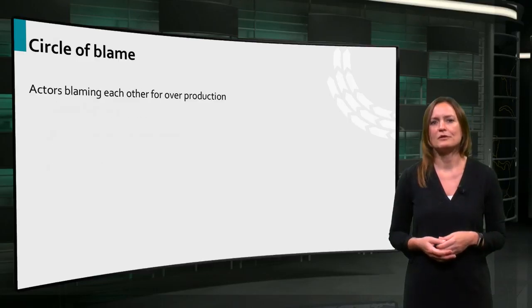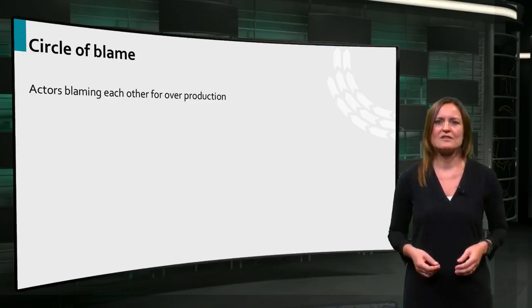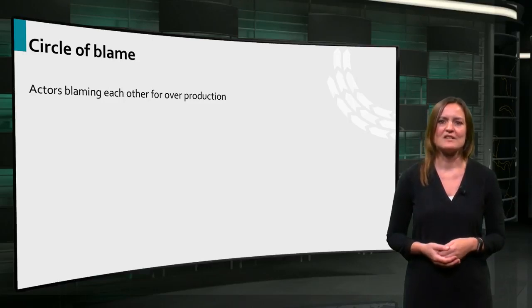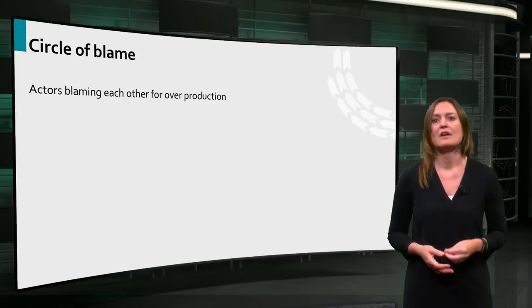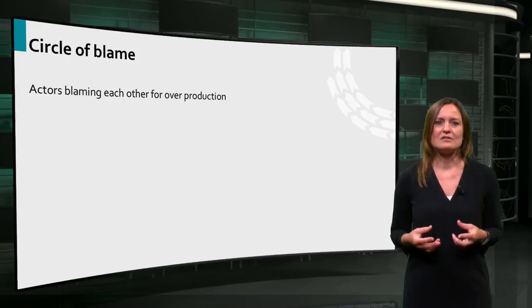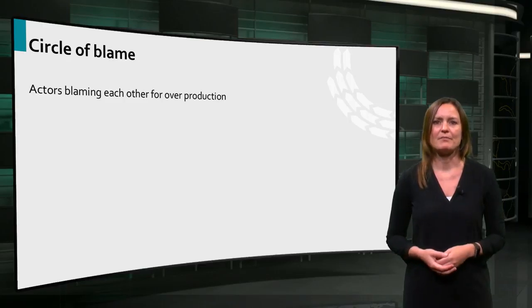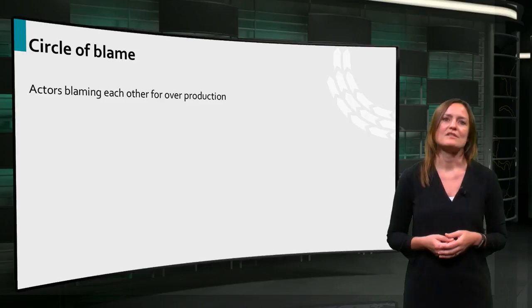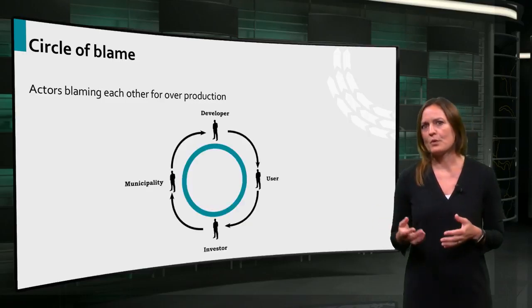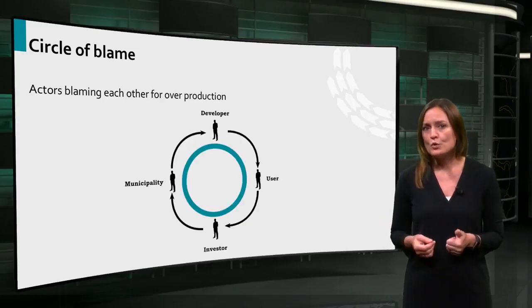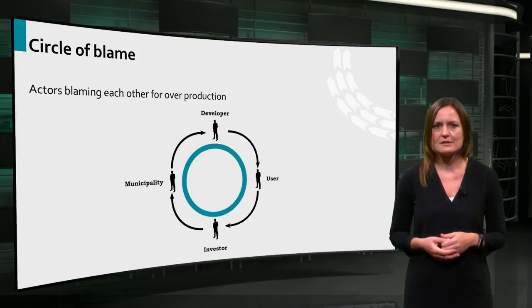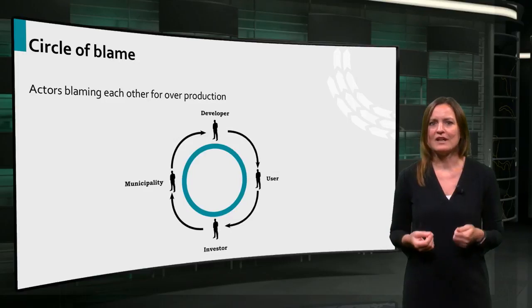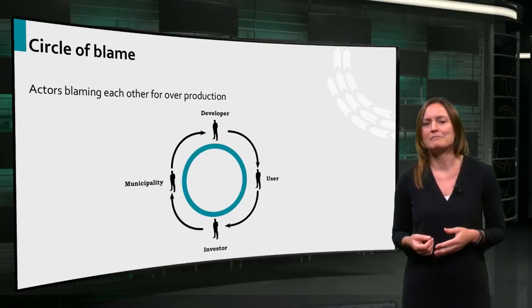Also, the parties involved in designing, developing and investing in new real estate are normally not the same parties as those who own existing vacant real estate. And so, they do not have a drive to adapt and reuse existing buildings. In a free market, and as long as land is available on attractive locations, new build will be interesting. When it comes to the question who is to blame for the overproduction of real estate, the different actors blame each other — this is what is called the circle of blame.